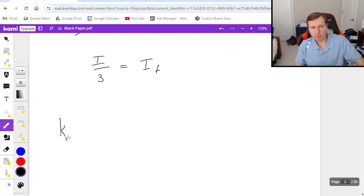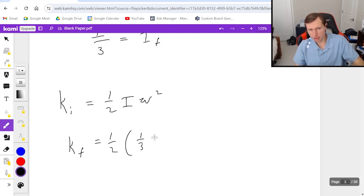So back here when I'm plugging in for K initial which did not change and K final which did change it's now going to be one-half times one-third I times three omega squared.